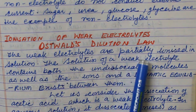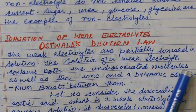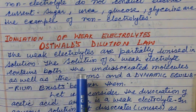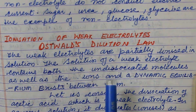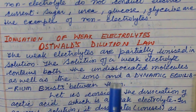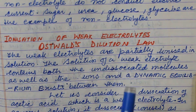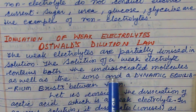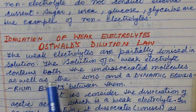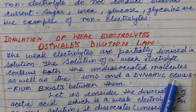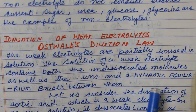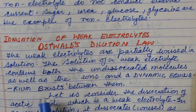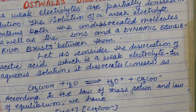The weak electrolytes are partially ionized in solution, meaning the electrolytes are dissociated into ions somewhat, and somewhat are undissociated. The solution of a weak electrolyte contains both undissociated molecules as well as ions, and a dynamic equilibrium exists between them.